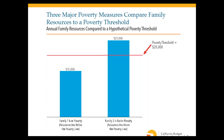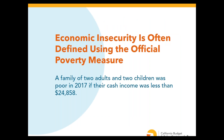I'll start with the Official Poverty Measure, which has been around the longest and is the most common measure of poverty in the United States — often cited in newspaper articles and academic pieces. Under the official poverty measure, a family of two adults and two children was poor in 2017 if their cash income was less than about $25,000.